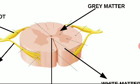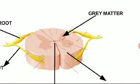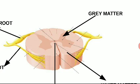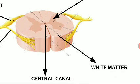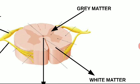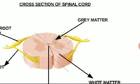Gray matter is inside. Gray matter means the area of the spinal cord with non-myelinated nerve fibers. So there is gray matter and white matter — gray matter is inside and white matter is outside.